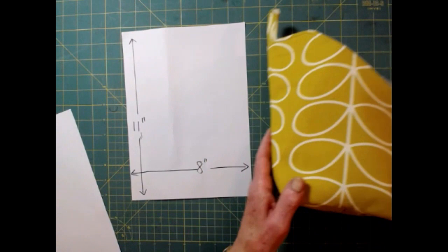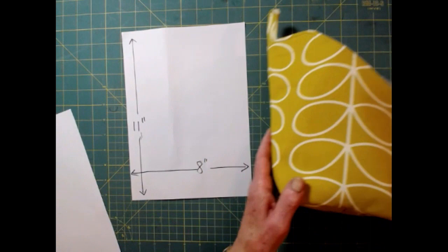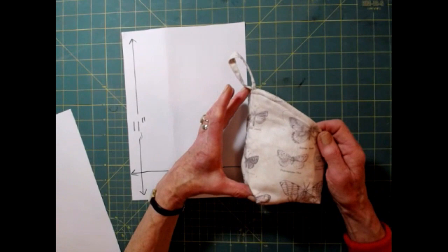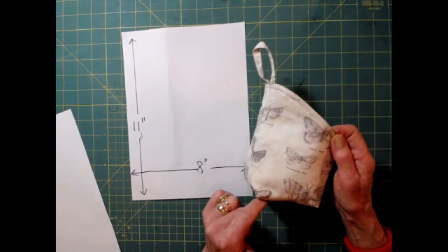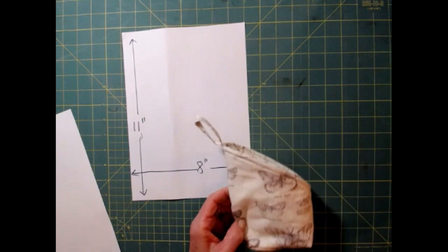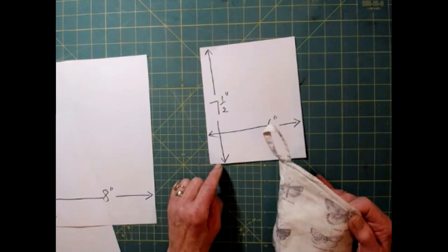Should you wish to make a smaller pod, say like this particular one, the height of this one is 6 inches, its base is 3 inches. 6 plus half of 3 is 7 and a half. The width of the piece of paper needs to be twice 3, which makes it 6 inches. The height of the pod plus half the base and the piece of paper is twice the base.